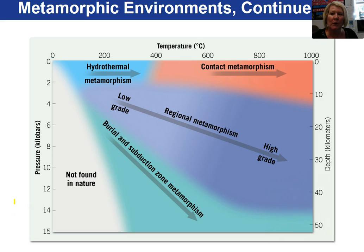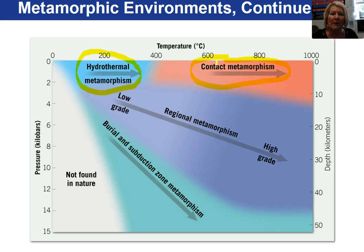This figure is a pressure-temperature-depth diagram and on it are plotted the different metamorphic environments. Hydrothermal metamorphism occurs in a low temperature, low pressure environment. Contact metamorphism is affected by temperature more than pressure. Burial and subduction metamorphism is at greater depth and moderate temperatures, and so forth.